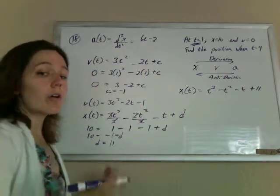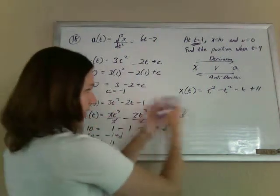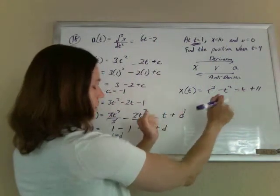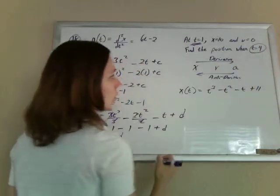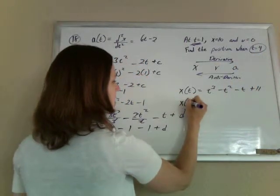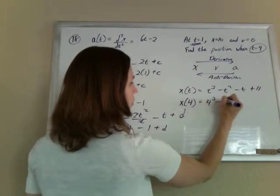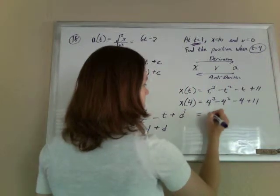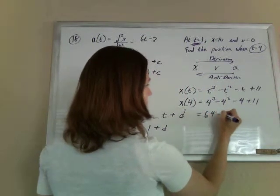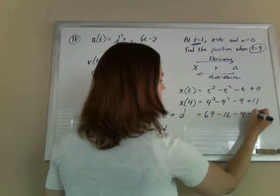And now, almost there, we've got a nice equation for any time we want for position, they happen to want when t is 4, so the position at time 4 is going to be 4 cubed minus 4 squared minus 4 plus 11. So that's 64 minus 16 minus 4 plus 11.